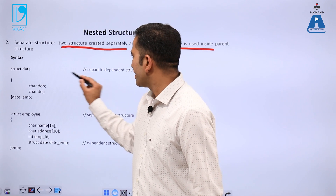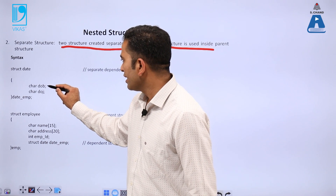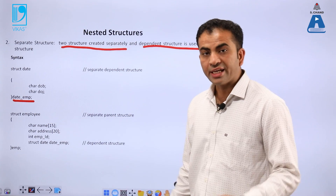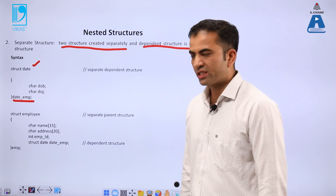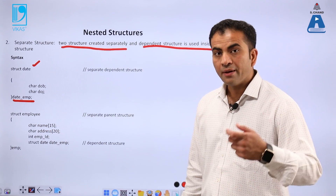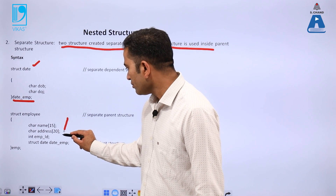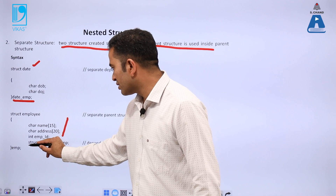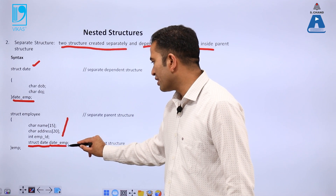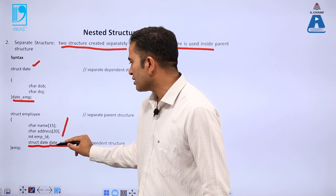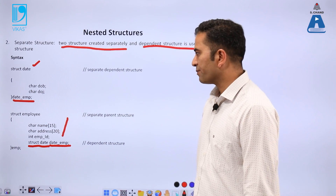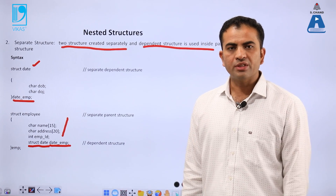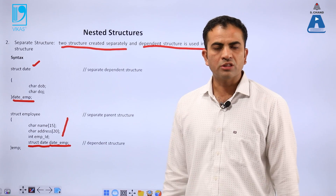The syntax is: struct date is the separate dependent structure, with members date of birth and date of joining, and a variable called date of employee. Then struct employee is the separate parent structure with its members. The dependent structure is nested inside the parent using the statement 'struct date date_emp', where struct date is the structure name and date_emp is the variable. This is the syntax of a separate structure — let us now have a practical experience by running a program using this concept.